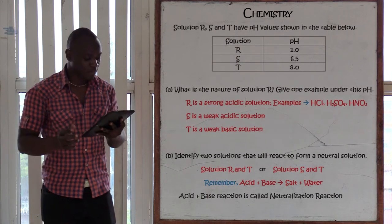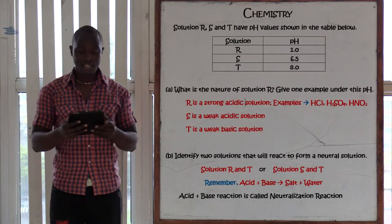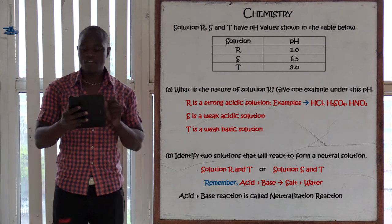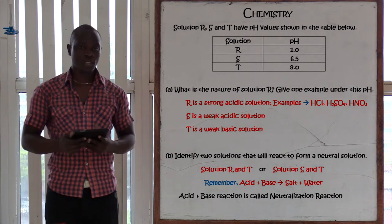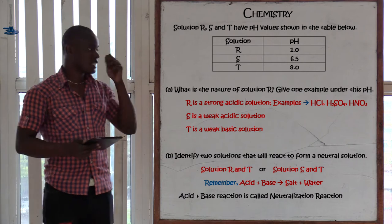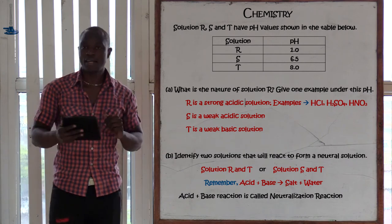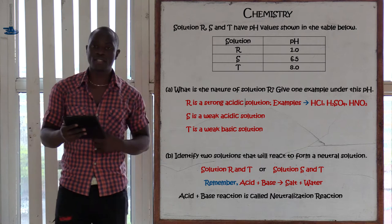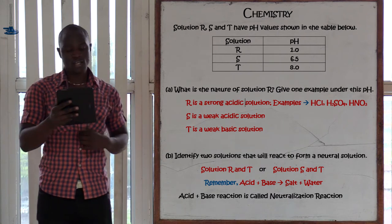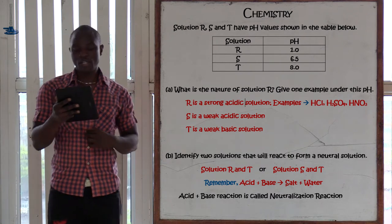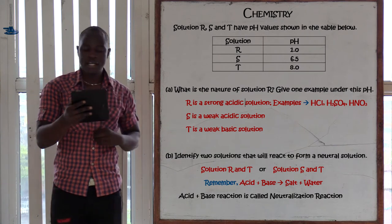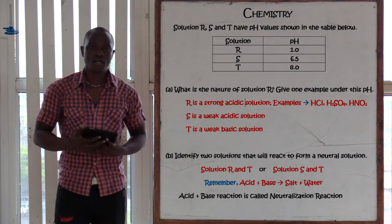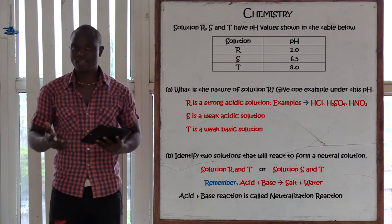Question number 13 is asking: solutions R, S, and T have pH values as shown. In the table, solution R has pH 1, S has pH 6.5, and T has pH 8. The first question asks what we can deduce about the nature of solution R.